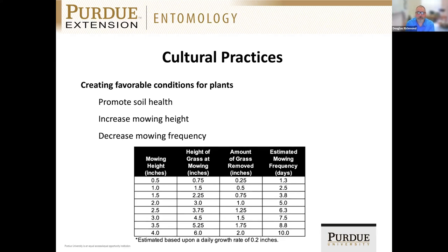That goes hand in hand with decreasing mowing frequency. If you mow your lawn at four inches and follow the one-third rule — never removing more than one-third of the plant tissue — you can wait until the grass gets to six inches before mowing off the top two, reducing mowing frequency to about ten days. I understand that in most cases you don't have control over that, but it's worth communicating this to your clientele. If there are folks that mow their own grass but you manage it, suggest that they raise their mowing height and decrease mowing frequency — it just makes the plants more resilient to damage.